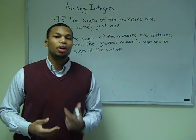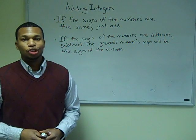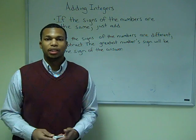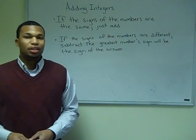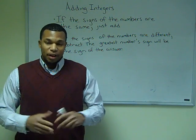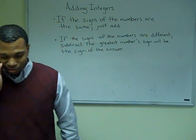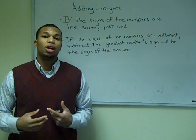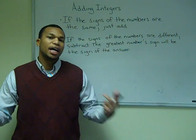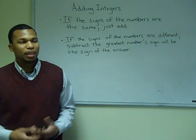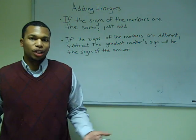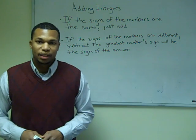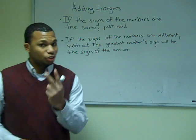Now as the numbers become larger and larger, drawing them on a number line will become unrealistic — it becomes tedious. As the integers become larger, it may be tiresome to draw number lines, especially if you have 50, 100, or 200. So integers can be added and simplified by these two rules.